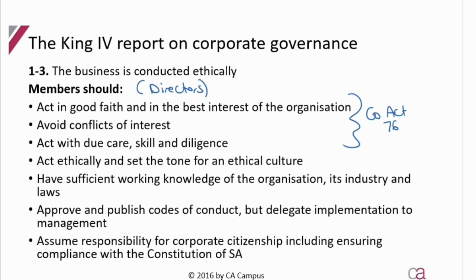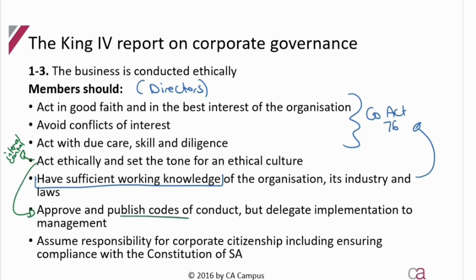Directors must also have the knowledge they need, which is included in the Companies Act. Other than that, they must set the tone for an ethical culture. We saw this with internal control — a company has to have internal control, and one of the five factors of internal control was to have a strong control environment. A strong control environment means creating that ethical culture, and one of the ways to achieve that is to establish codes of conduct so each employee understands their role and responsibility.